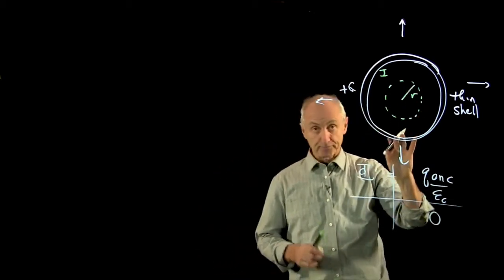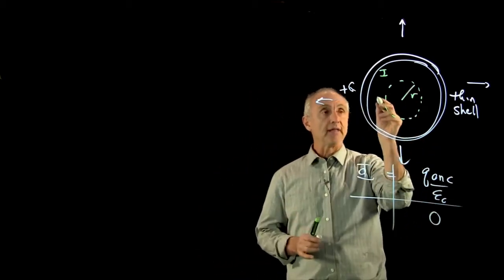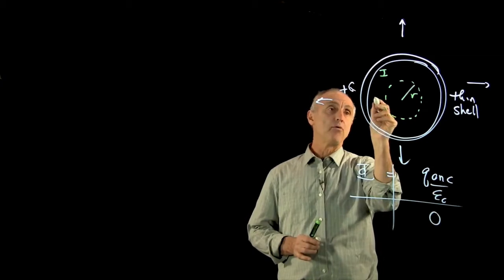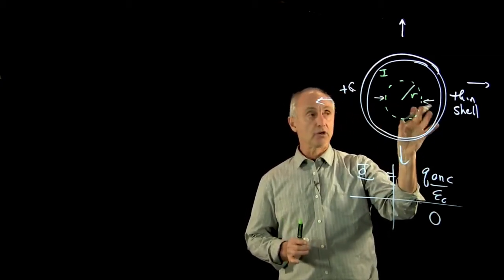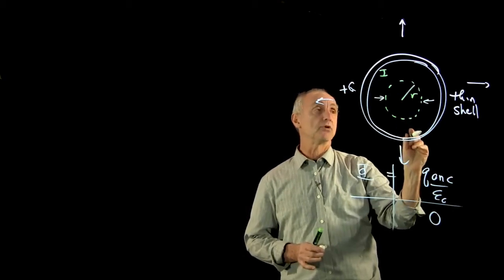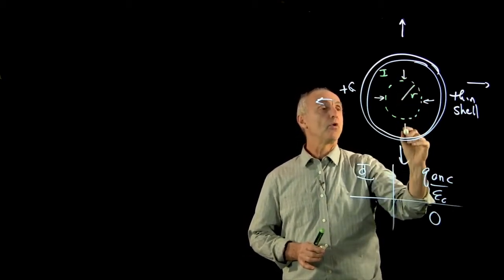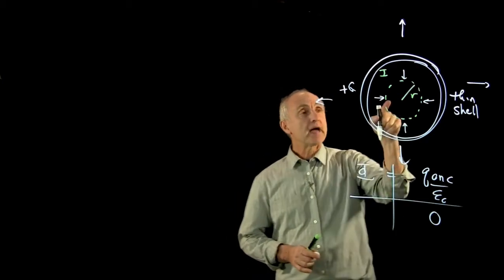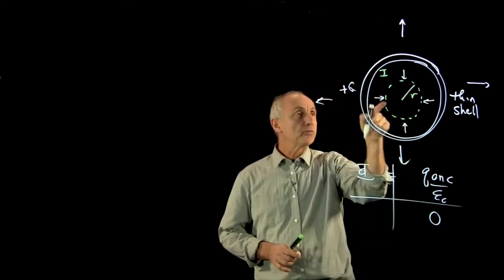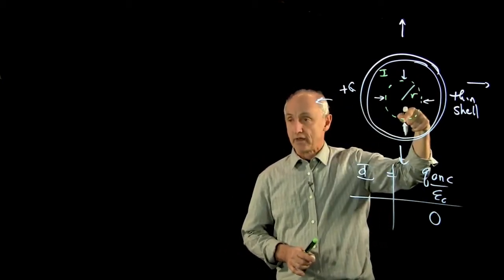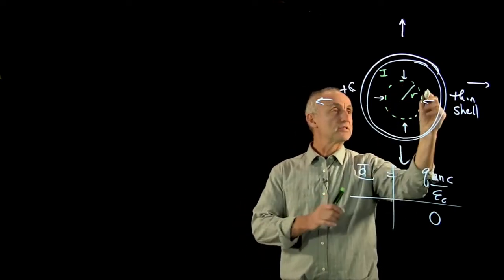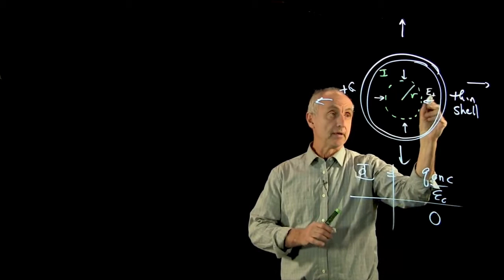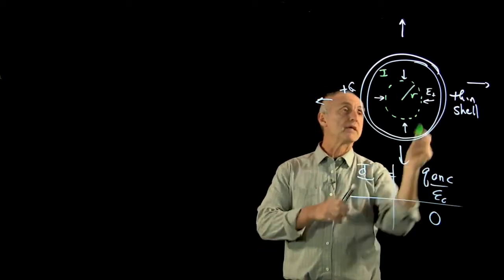Now, by the symmetry, you could argue that E is going to point either out, might point like that on both sides. It could be conceivably non-zero, so it could point all the way in there. But in that case, if the electric field pointed in everywhere there, and that's just a conjecture, then this side, because this is, if we just conjectured this. Now, it won't be right, but we're just making conjecture.